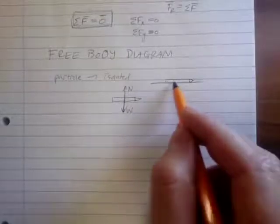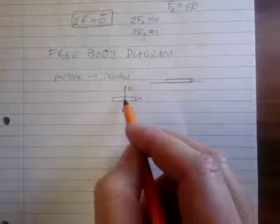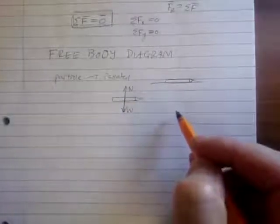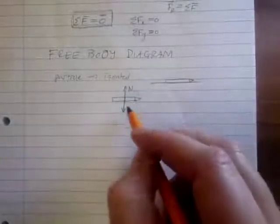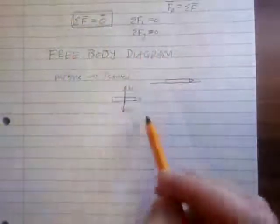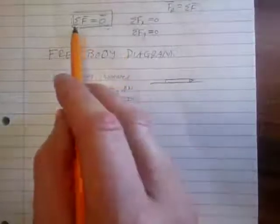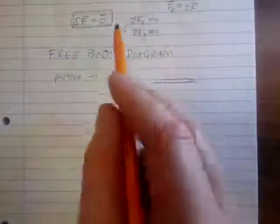So this table was applying a normal force, and gravity was applying a weight. So when I isolate it, I have to apply the normal force and the weight. And then, once I'm in this position, then I'm able to move on to my equation of equilibrium and begin to solve for any unknown forces.